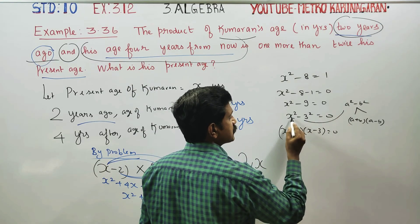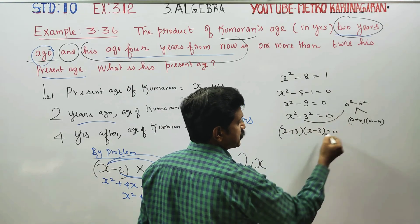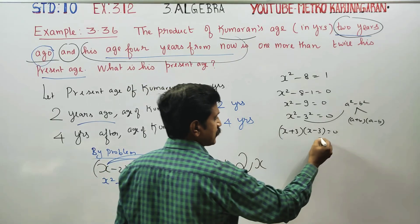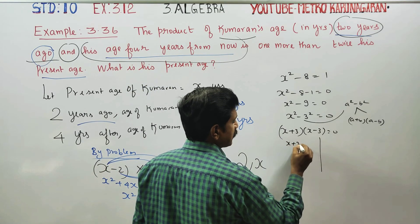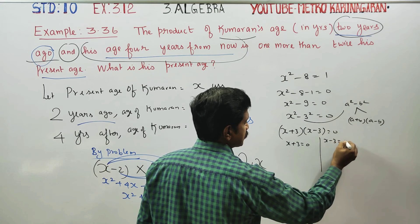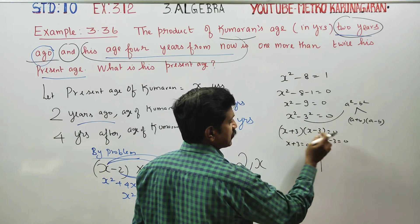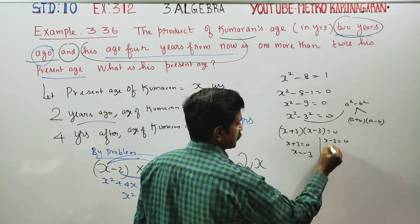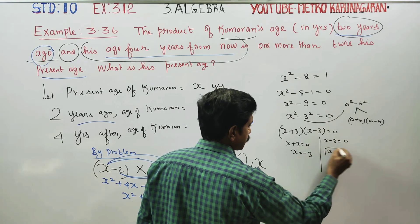Applying the formula with a equals x and b equals 3: x plus 3 into x minus 3 equals 0. So x plus 3 equals 0 gives x equals minus 3, and x minus 3 equals 0 gives x equals plus 3.